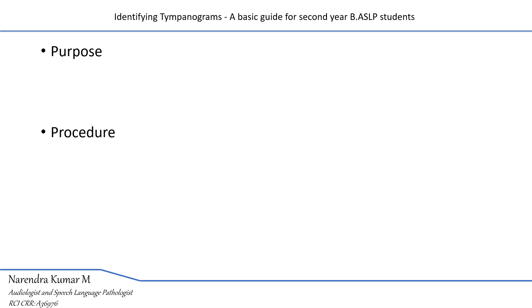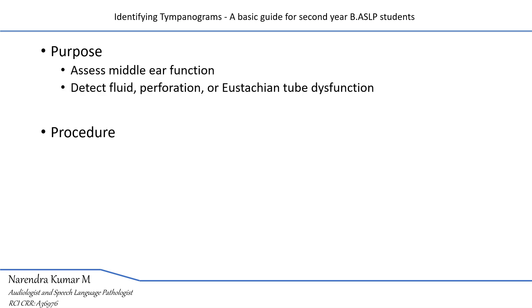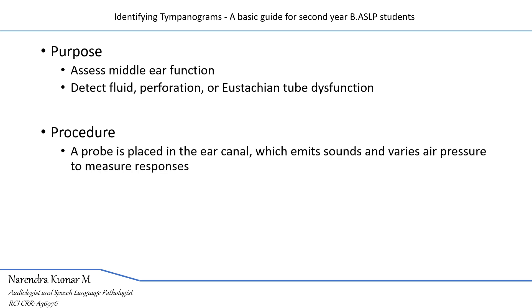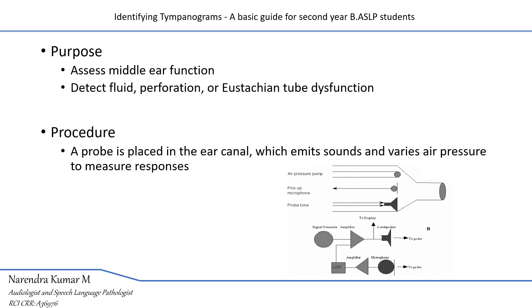The purpose of performing tympanometry is to assess the middle ear function. This procedure will help us to identify fluid presence in the middle ear, perforation of the tympanic membrane, or Eustachian tube dysfunction. It is performed by placing a probe in the ear canal, which emits sounds and varies the air pressure to measure the responses of the tympanic membrane.